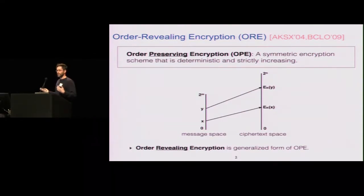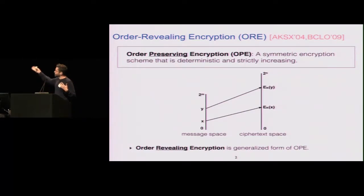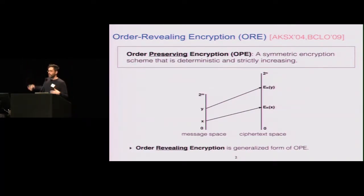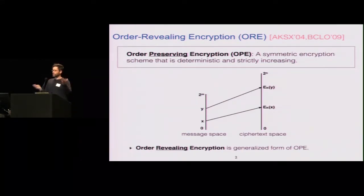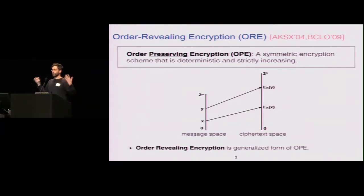Order-revealing encryption is a more general version where the ciphertexts aren't actually numbers in order, but if somebody were to look at two ciphertexts, they could figure out which was for the smaller plaintext and which is for the bigger one. So order is revealed.